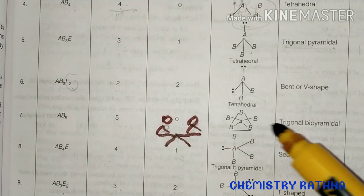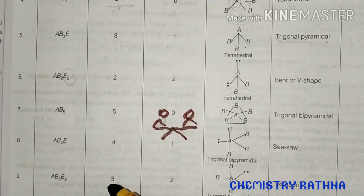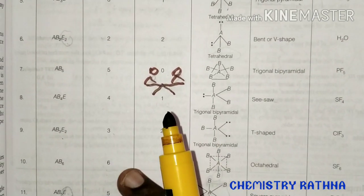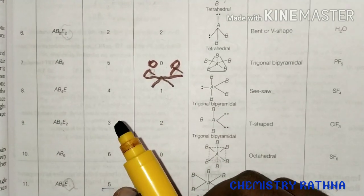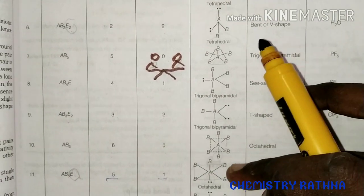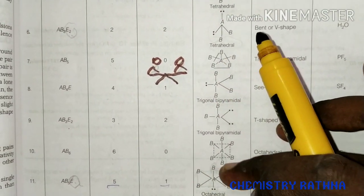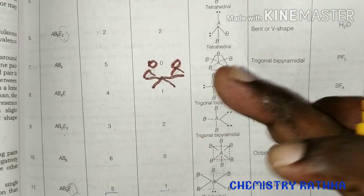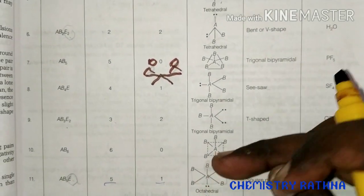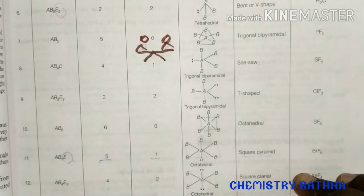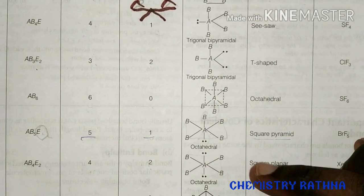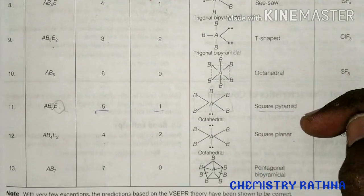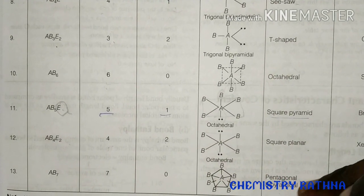If you consider two bond pairs and three lone pairs, it is T shape. If you consider two bond pairs and one lone pair, it is trigonal bipyramidal. Without a lone pair, if you have 4 bond pairs it is square planar. If it is 7 bond pairs, it is pentagonal bipyramidal.